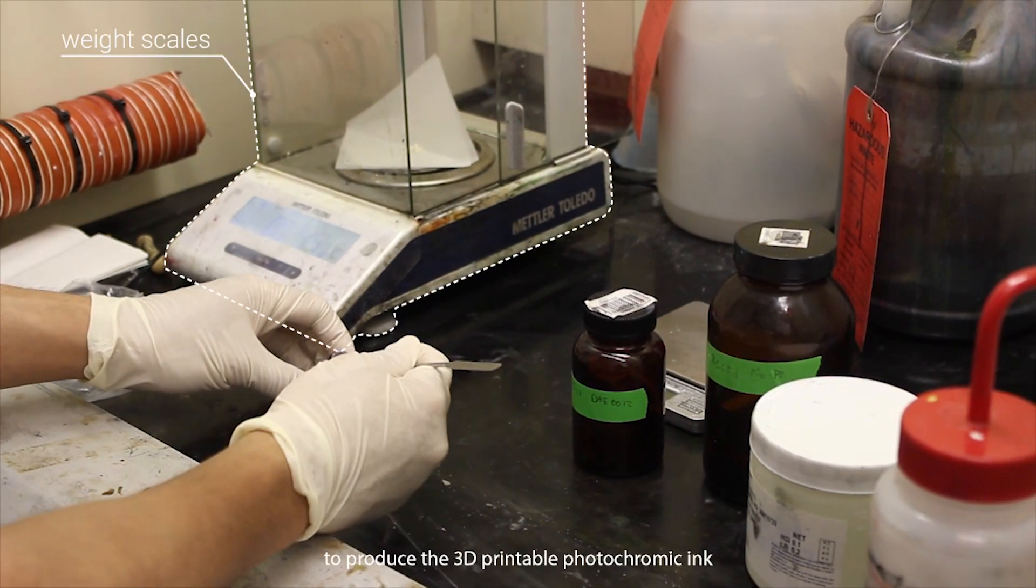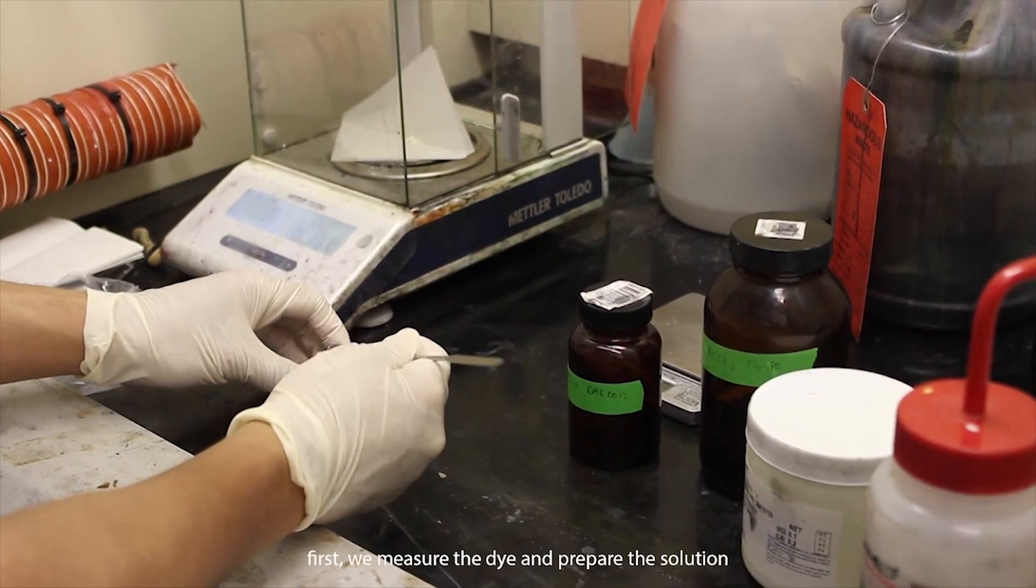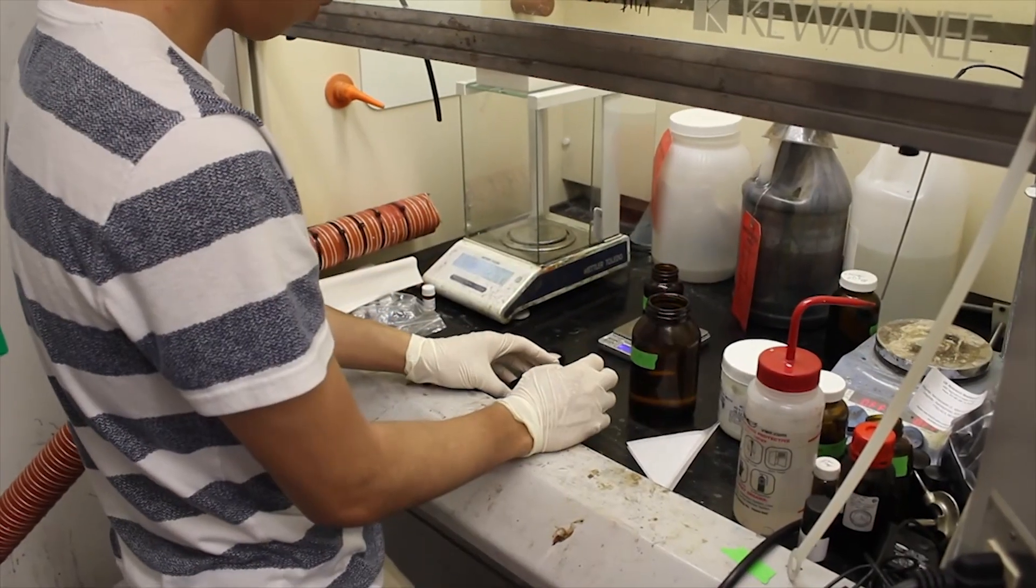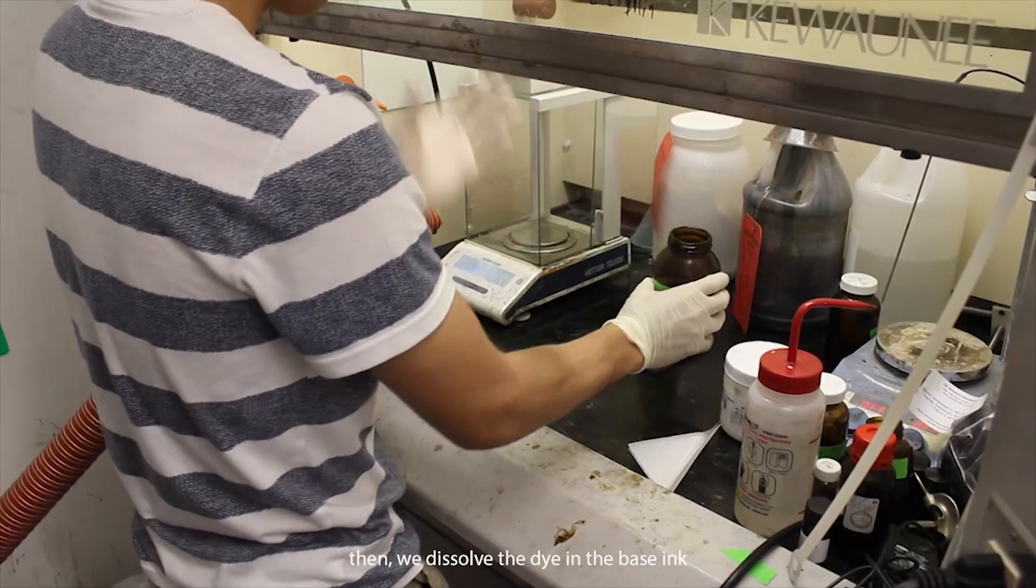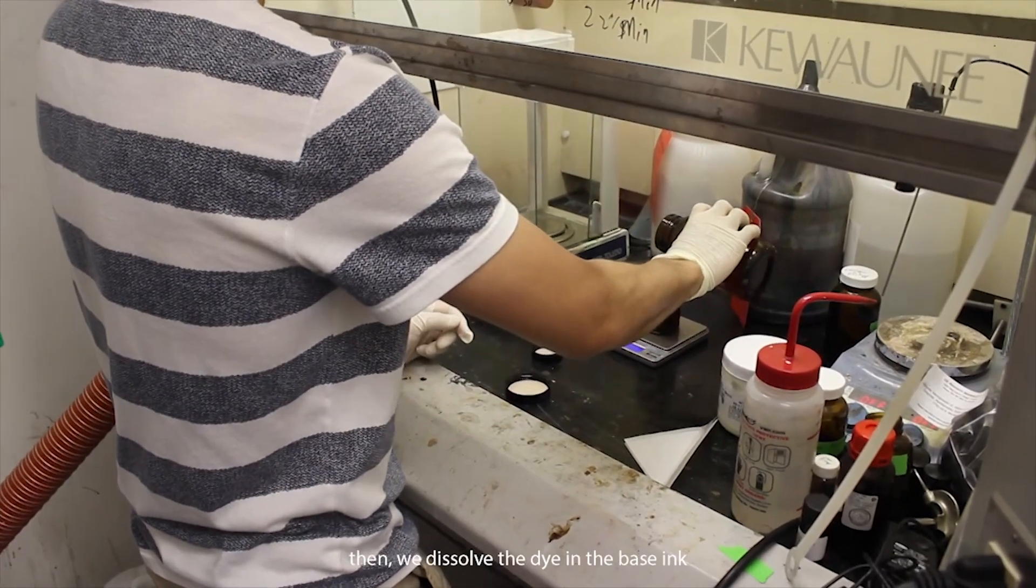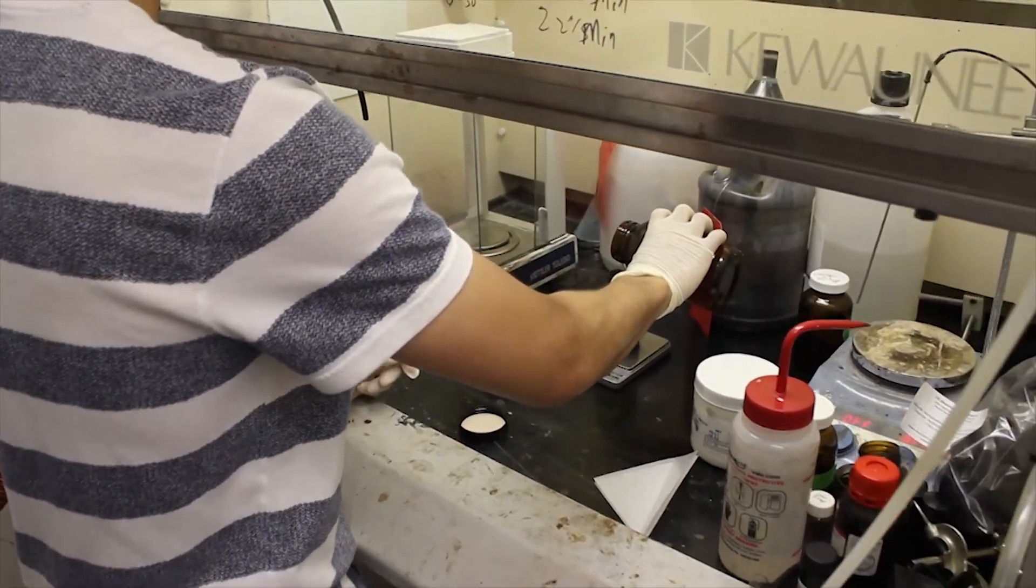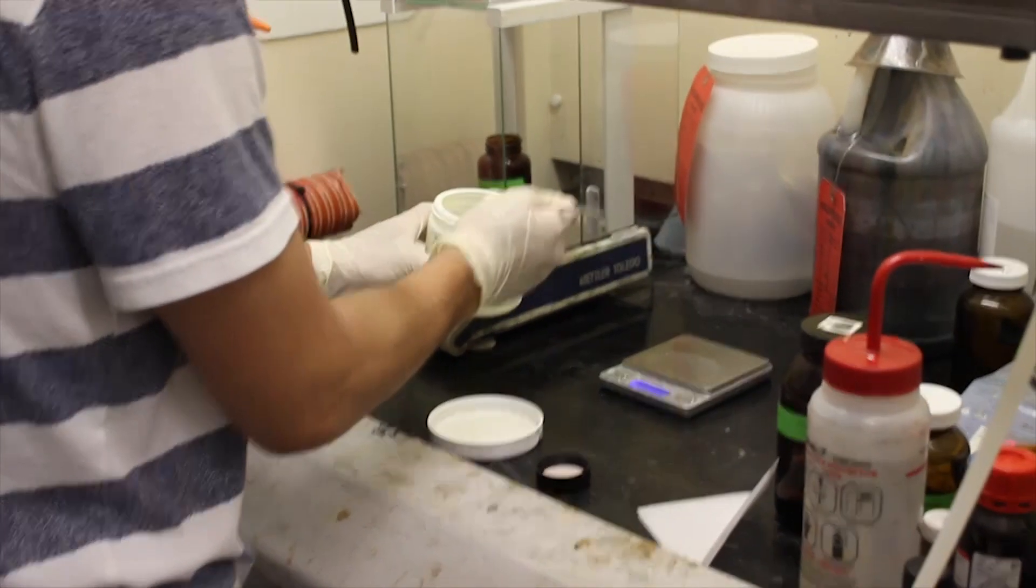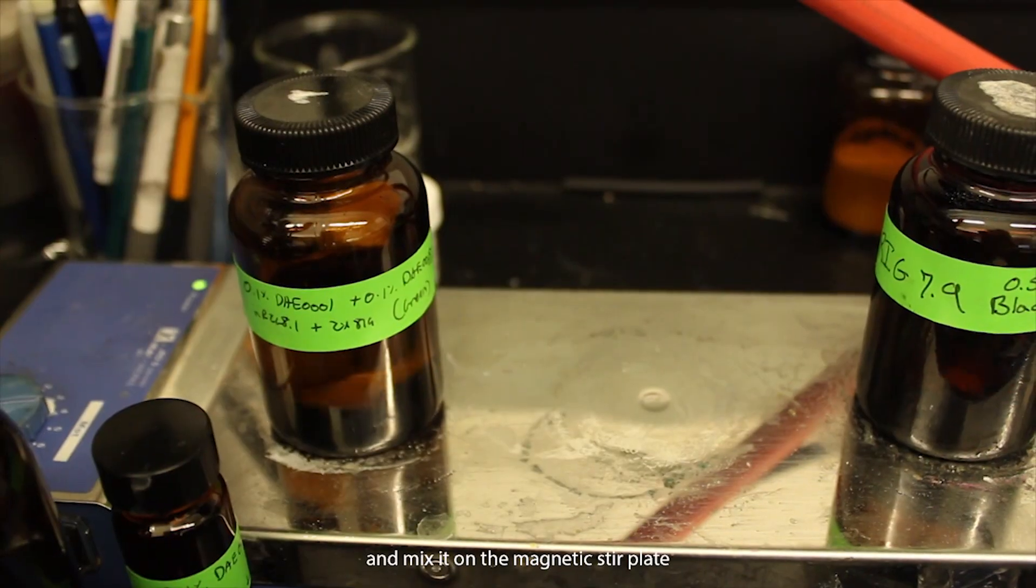To produce the 3D printable photochromic ink, first we measure the dye and prepare the solution. Then we dissolve the dye in the base ink. We then add the photoinitiator to the ink and mix it on the magnetic stir plate.